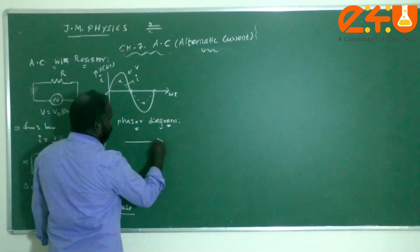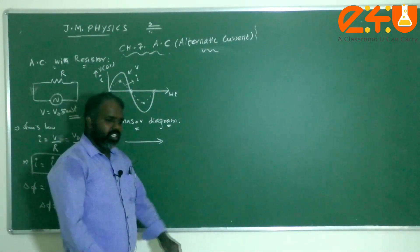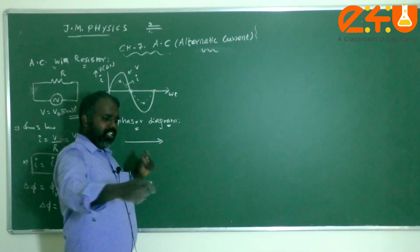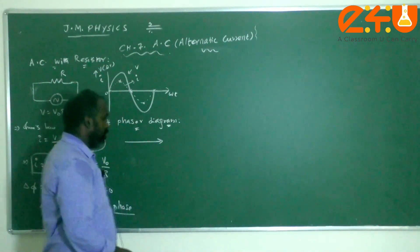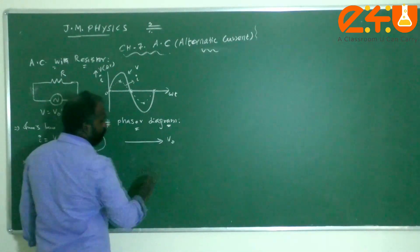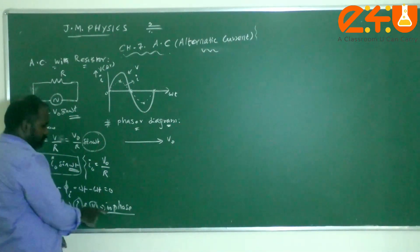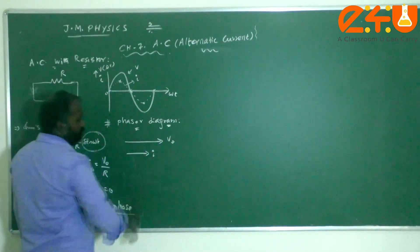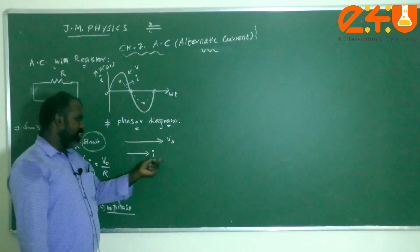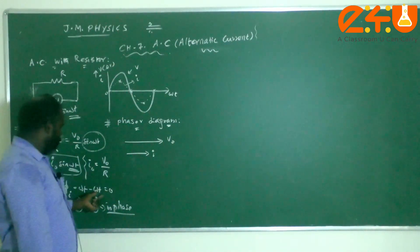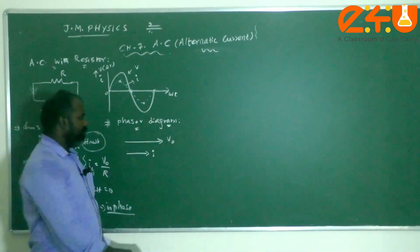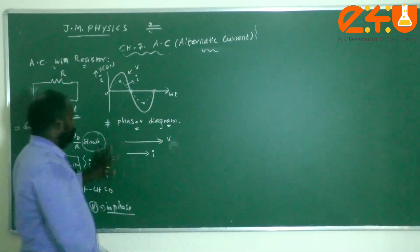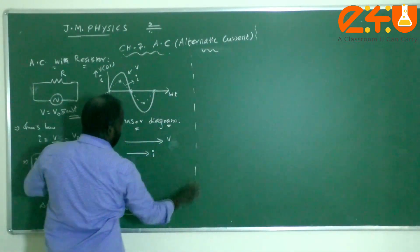In vector representation, the length of a line represents the magnitude of the vector. Similarly, here voltage has greater magnitude, so V₀ is represented by a longer arrow. Since the phase difference is zero, the angle between the voltage and current phasors is zero, meaning they are parallel. The current phasor is drawn shorter because the amplitude of current is less than the amplitude of voltage. This is the phasor diagram.